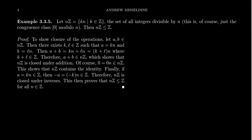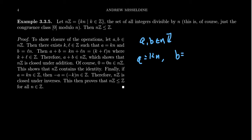We're going to take NZ right here. I claim that NZ is a subgroup of Z for any integer N. To prove this, we're going to use the proposition we proved previously and check these closure principles. So let's take two arbitrary elements of NZ. If they're elements of NZ, this means there's some type of factorization: A is going to equal KN and B is going to equal LN for some integers K and L. What happens when we add these things together?